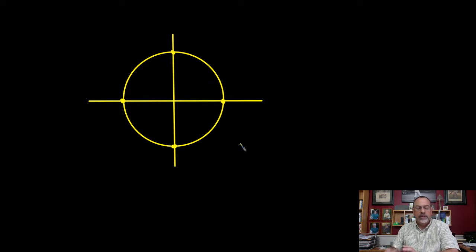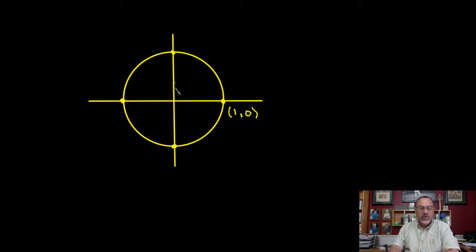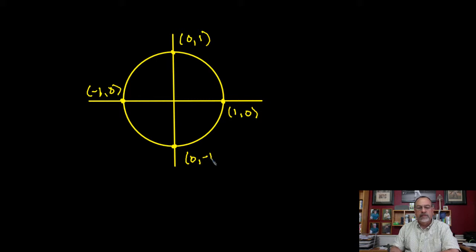The unit circle is a circle that has a radius of 1. If we put the unit circle on the coordinate plane, it allows us to determine four coordinates. Because the radius is 1, I can determine the coordinate of the rightmost point to be (1, 0), the top point to be (0, 1), the left point to be (-1, 0), and the bottom point to be (0, -1). Placing the unit circle on the coordinate grid gives us these points, which we'll need to determine the sine and cosine of our quadrantal angles.